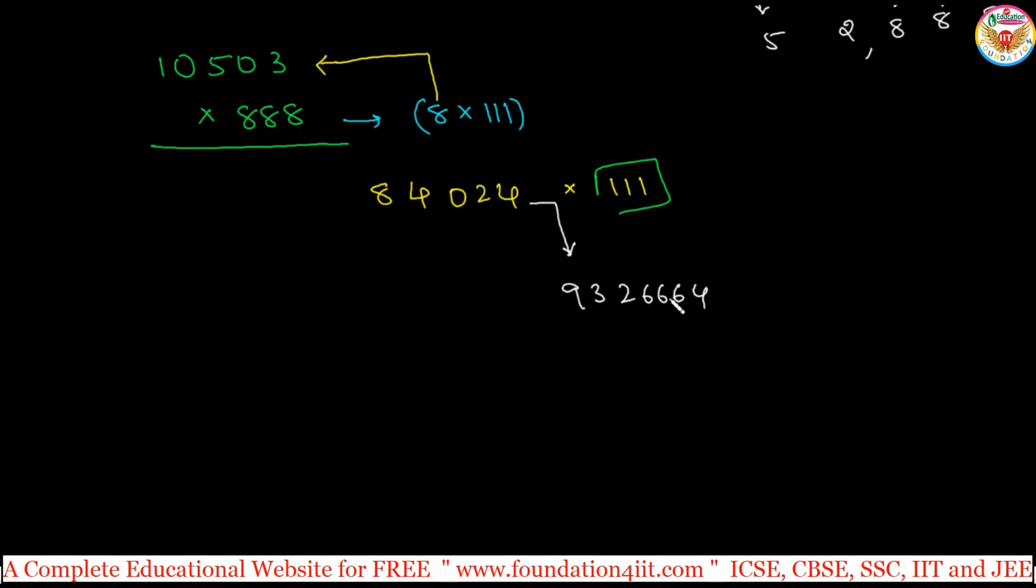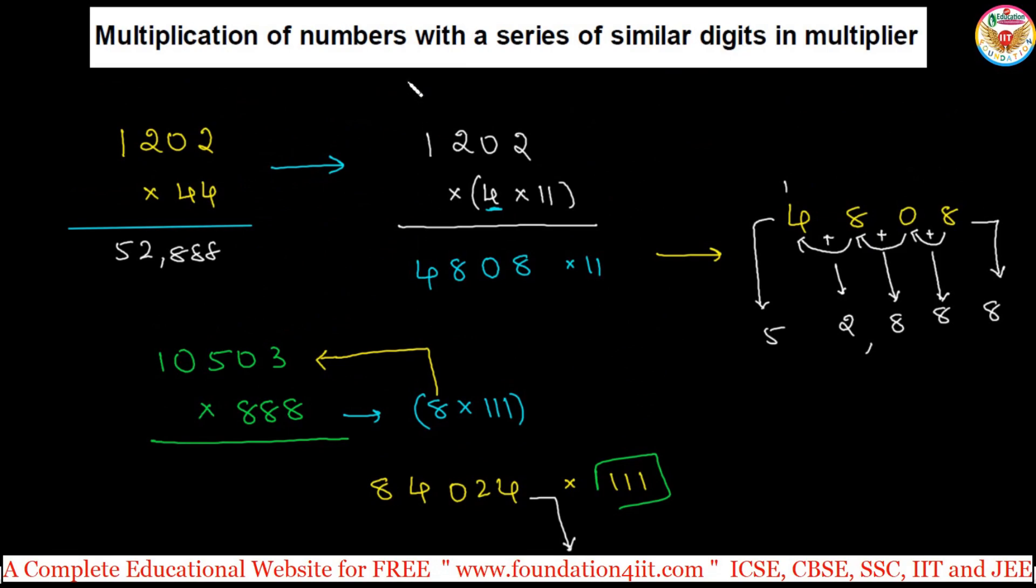Finally with one carry we get the answer. This is the additional extension method for the multiplication of numbers with series of similar digits in multiplier.